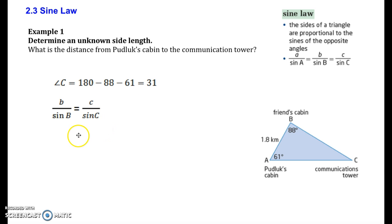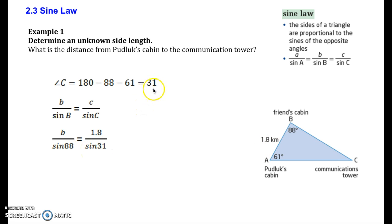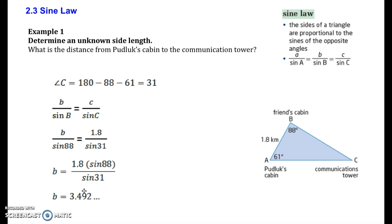Then we're going to use the sine law. We take B over sine B and that equals C over sine C. Taking the values: we don't know what B is — that's this length down here. Sine of B is 88. Then we know that side C is 1.8 kilometers over sine of 31, which we found to be angle C. Rearranging, we multiply both sides by sine 88 and put that into our calculator, and we find out that the approximate distance from Pudluck's cabin to the communication tower is 3.492 kilometers, or approximately 3.5 kilometers. That's a pretty straightforward application of the sine law.